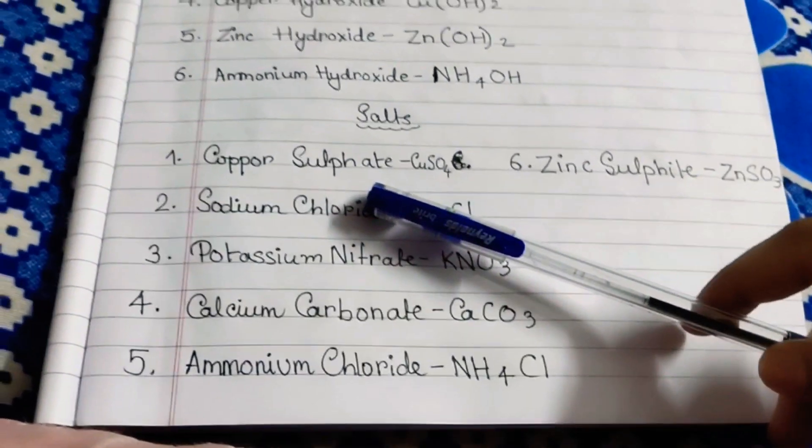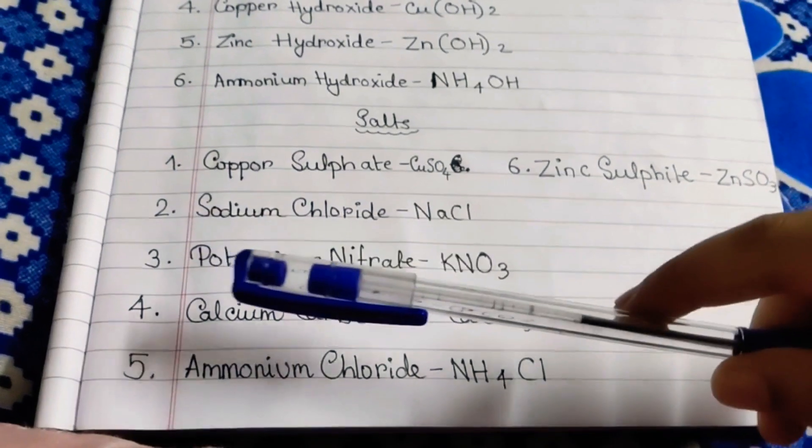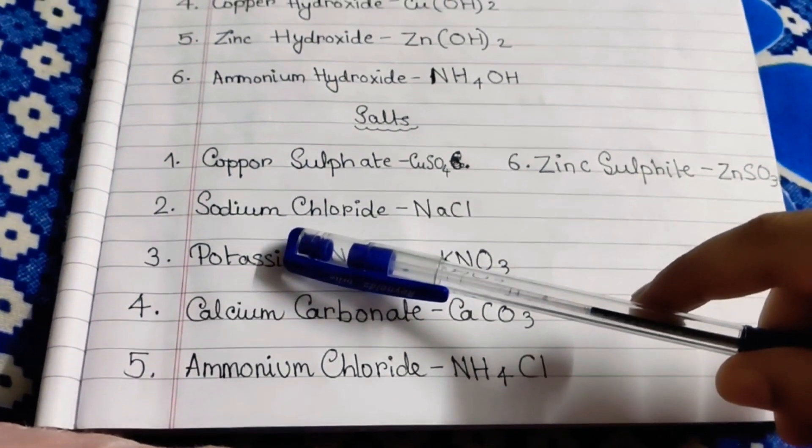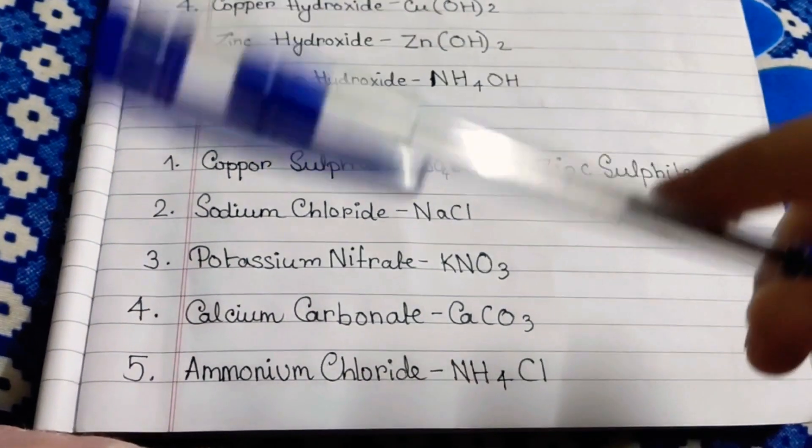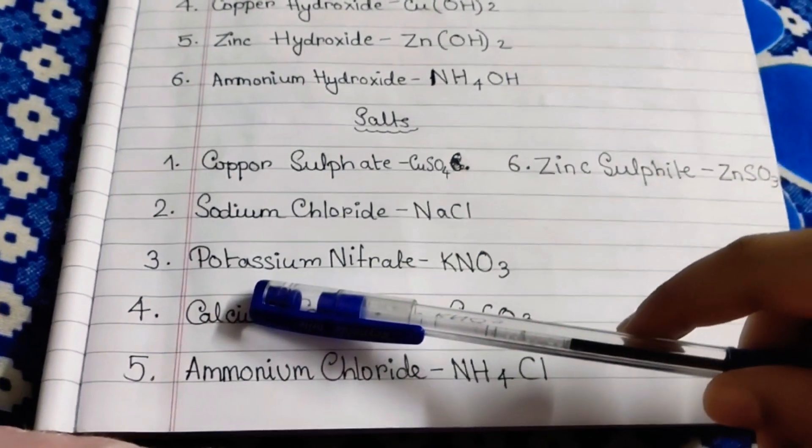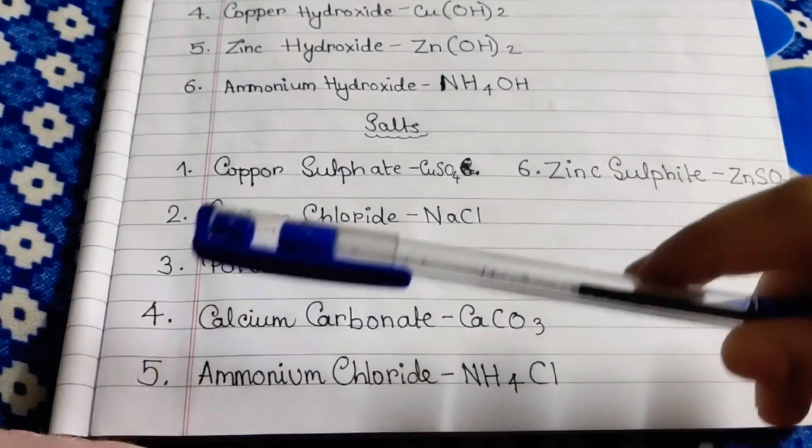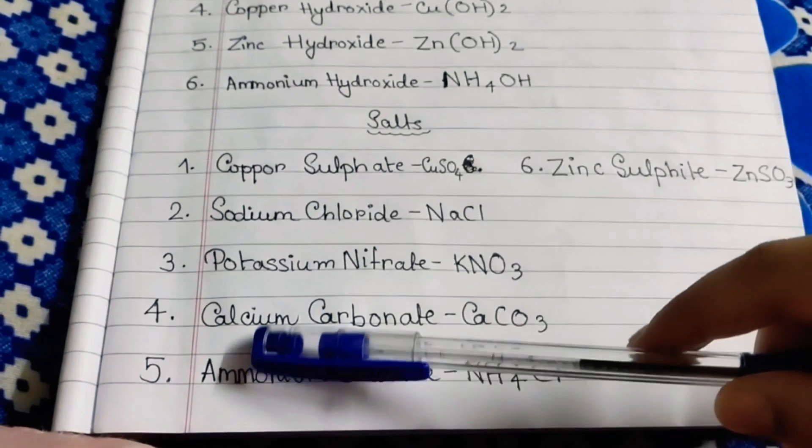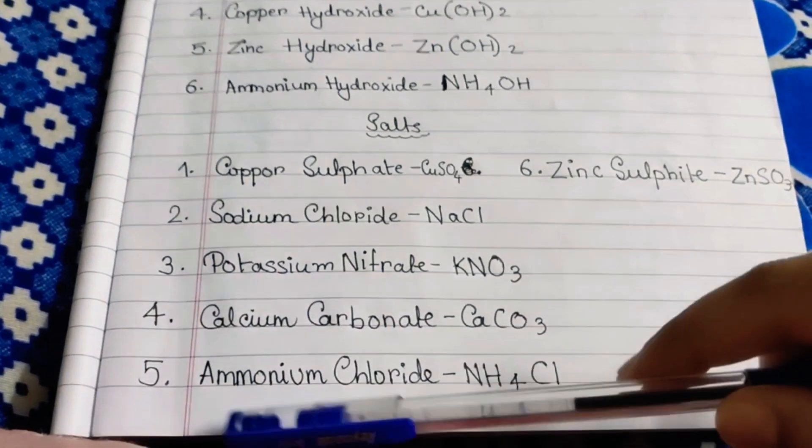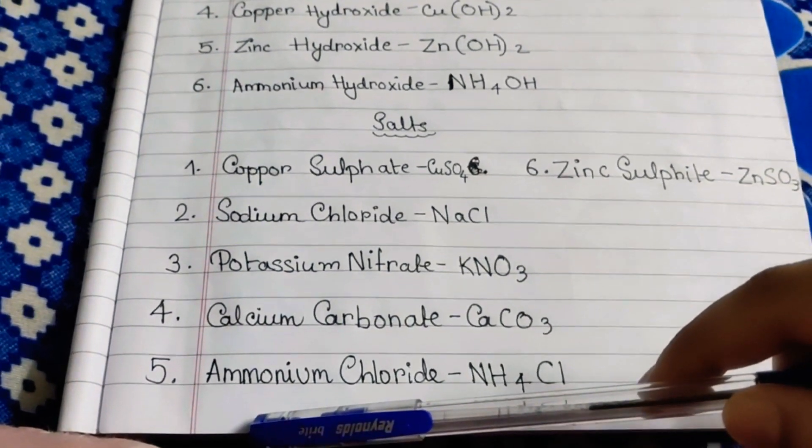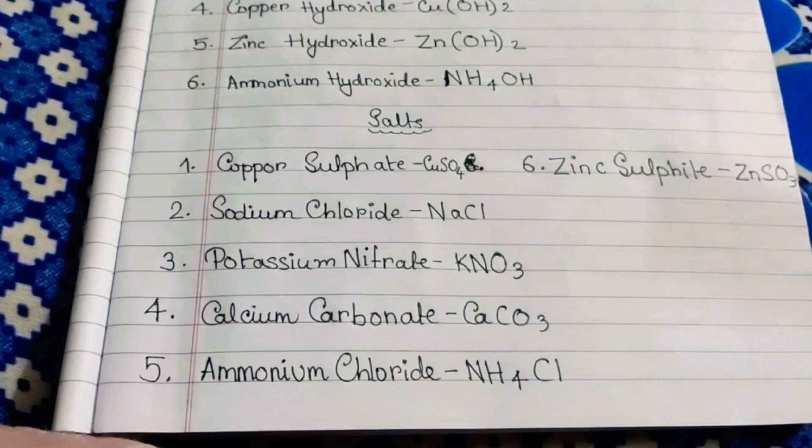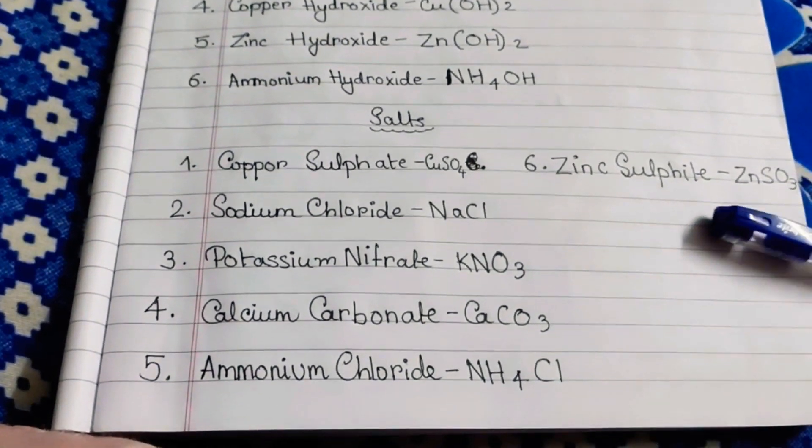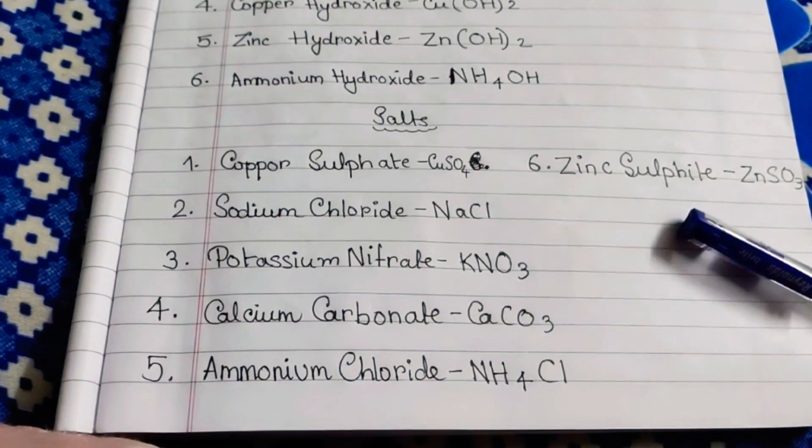First is Copper Sulfate CuSO4. Second, Sodium Chloride NaCl. Third, Potassium Nitrate KNO3. Fourth, Calcium Carbonate CaCO3. Fifth, Ammonium Chloride NH4Cl. Sixth, Zinc Sulfate ZnSO4.